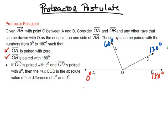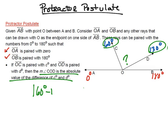What this postulate says is we can find the measure of this angle using these two degrees. The measure of angle COD is going to be the absolute value of the difference of C degrees and D degrees. So we're going to take the absolute value of 60 degrees minus 130 degrees. If I do 60 minus 130, we get negative 70 degrees. But taking the absolute value of negative 70 gives us positive 70 degrees. So the measure of this angle is going to be 70 degrees.